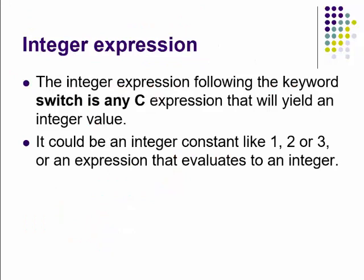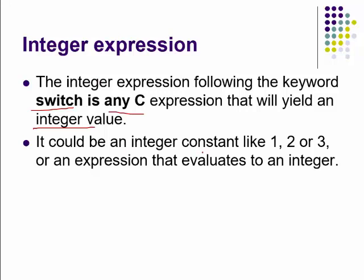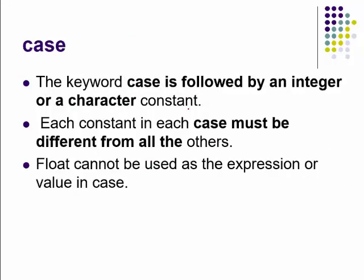The integer expression following the switch keyword evaluates to an integer value — it could be an integer constant like 1, 2, or 3, or an expression that evaluates to an integer. The case keyword is followed by an integer or character constant. Characters are internally numbers, so they can be used. Each case must have a different constant value. Float cannot be used as the switch expression or as a case value.